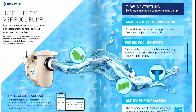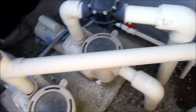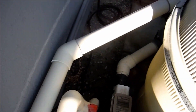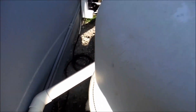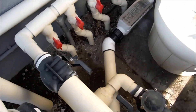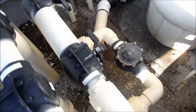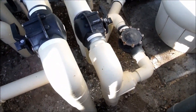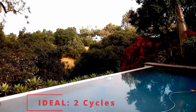Some of the newer variable speed pumps like the Pentair and Teleflow 3 have a built-in flow meter. The goal is to get at least one cycle of water through your system, meaning all the pool water is pulled in through the pump, goes through the filter, and back out again at least one time per day.